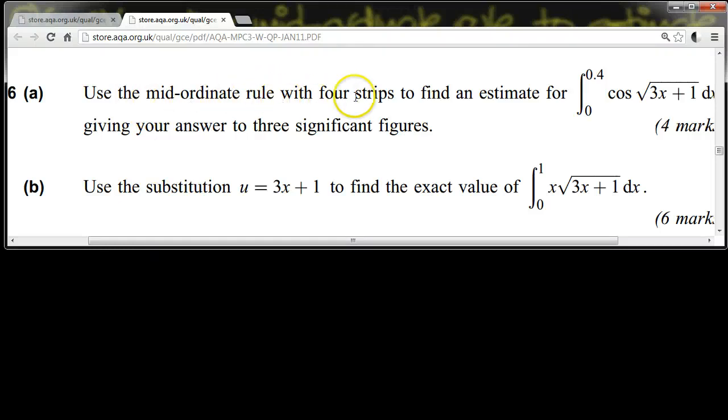Use the mid-ordinate rule with four strips to find an estimate for the integral of cos of root 3x plus 1 between 0 to 0.4, giving your answer to three significant figures. Use the substitution u equals 3x plus 1 to find the exact value of the integral of x square root of 3x plus 1 between 0 and 1.